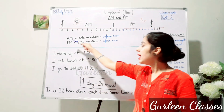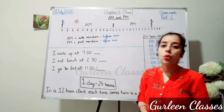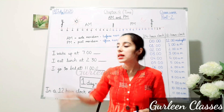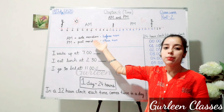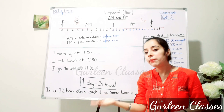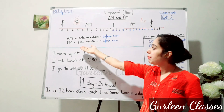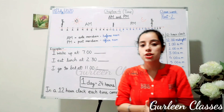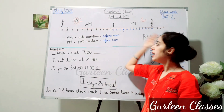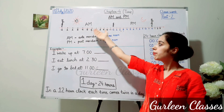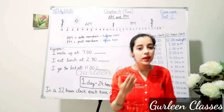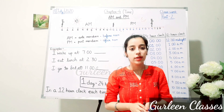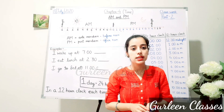AM and PM are two Latin phrases. AM means 'ante meridiem,' meaning before noon. And PM means 'post meridiem,' meaning afternoon. Here I have drawn a timeline. These kinds of timeline questions are also in your maths workbook — I hope you have done those questions.